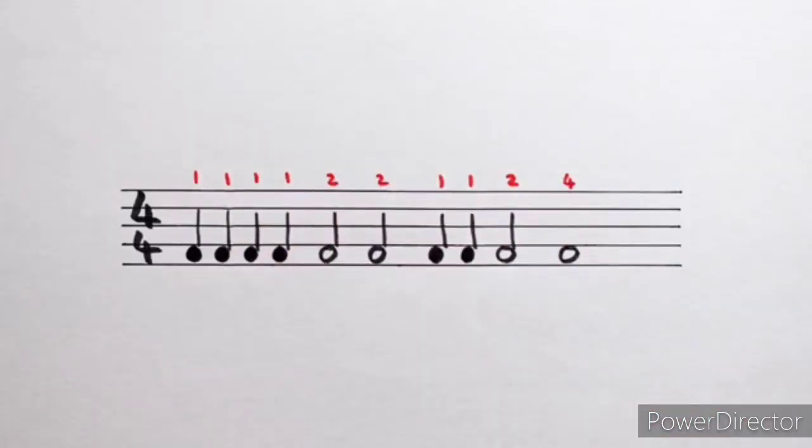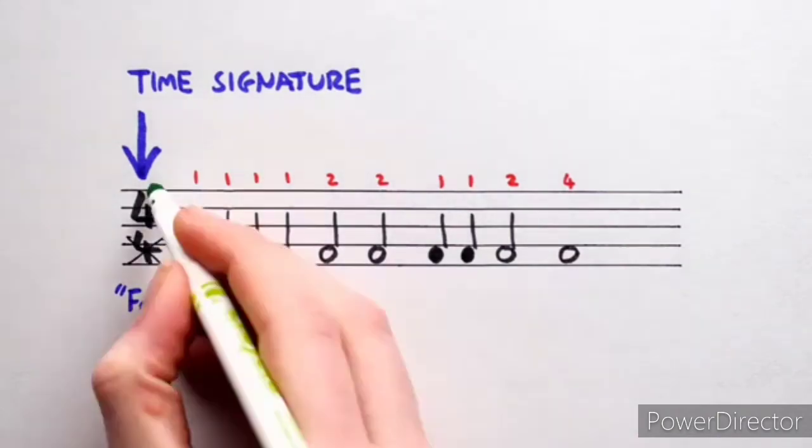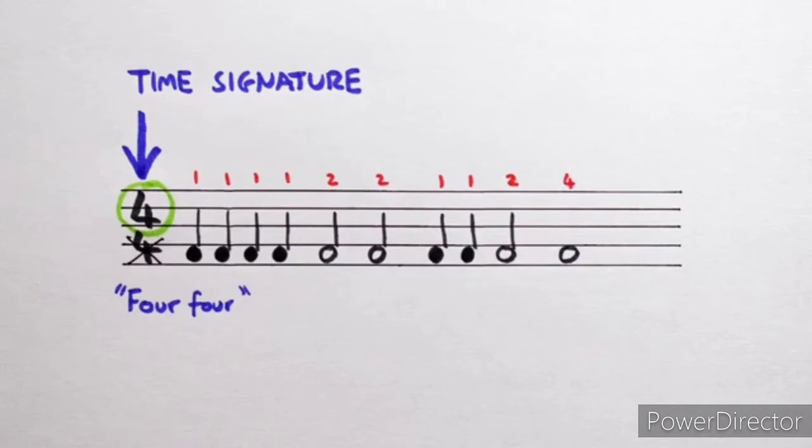With the counting down let's look at the time signature at the beginning of the tune. This particular time signature is called 4-4. For now let's forget about the bottom number and focus on the top number. This tells us how many beats will be between one bar line and the next. In this case the top number is 4 so every bar will be exactly 4 beats long.